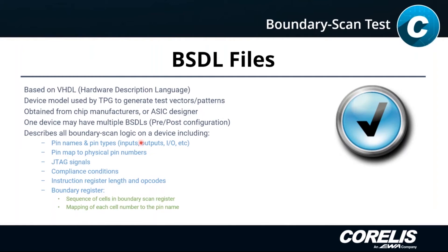You may have multiple BSDLs for one chip. That could mean it's a multi-chip module or a multi-core device where you have multiple logical taps inside and need to talk to each of them. You can also have a BSDL for a device that changes its behavior depending on whether it's configured. A common example is an FPGA: when you configure an FPGA, what used to be all bidirectional signals becomes a set of inputs and outputs, so you need a new BSDL to describe that changed behavior.